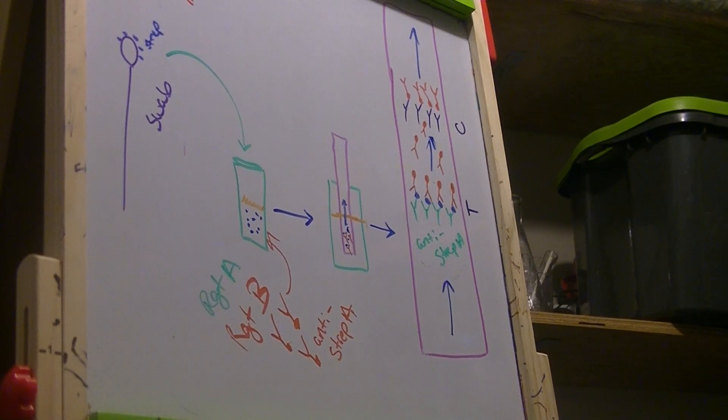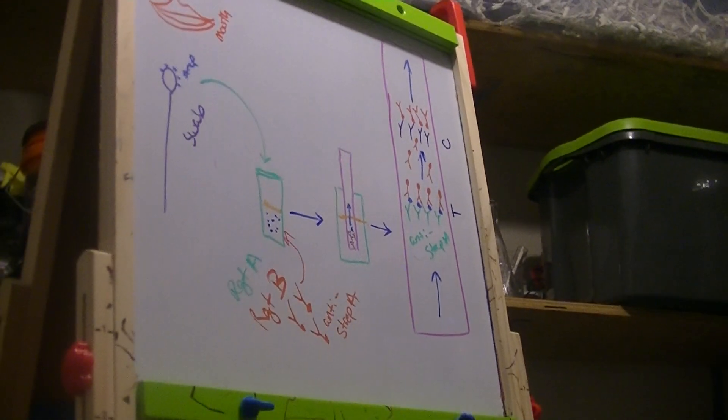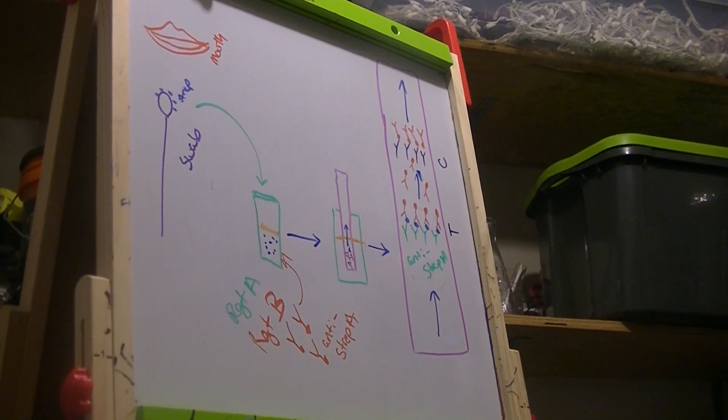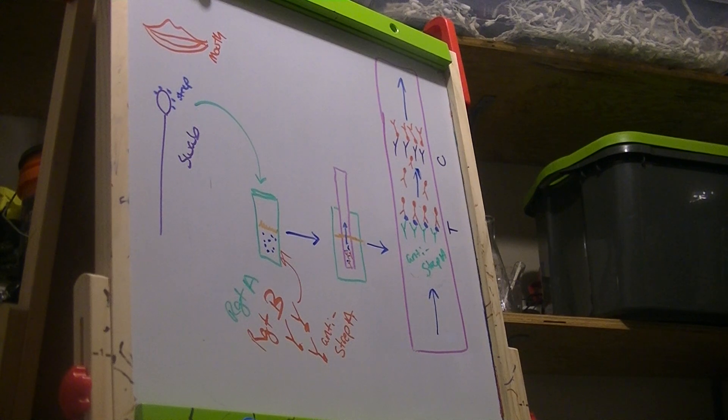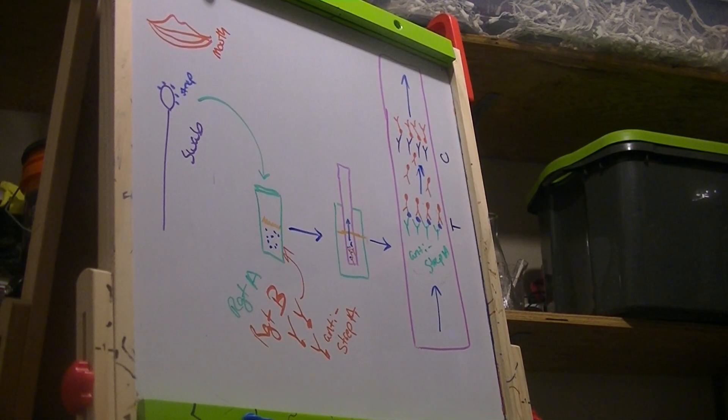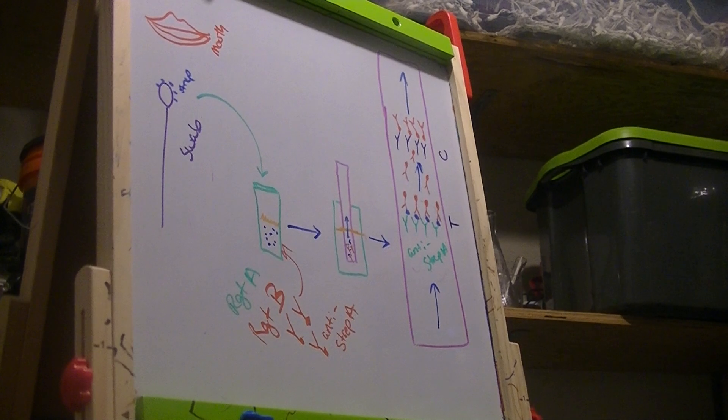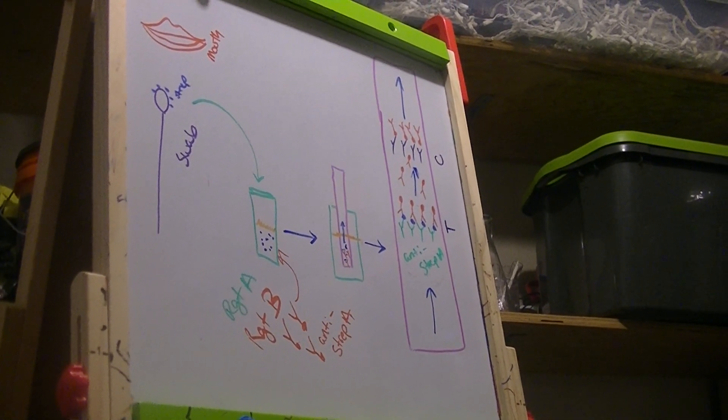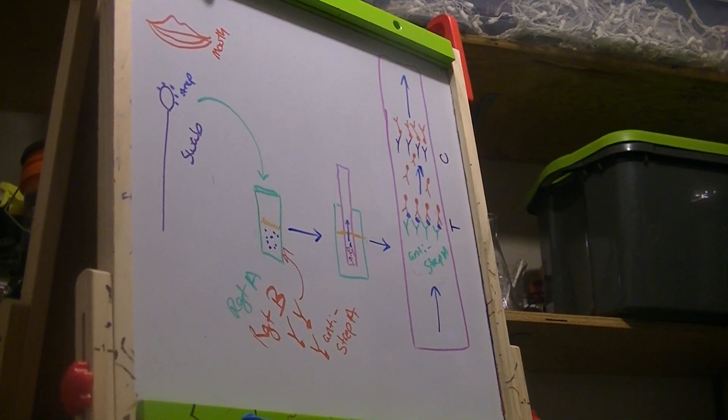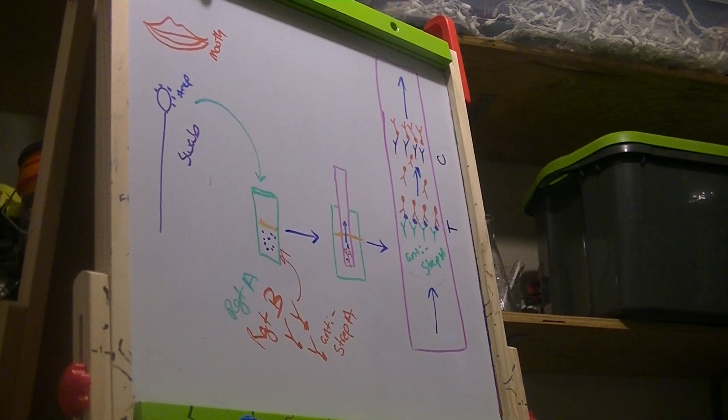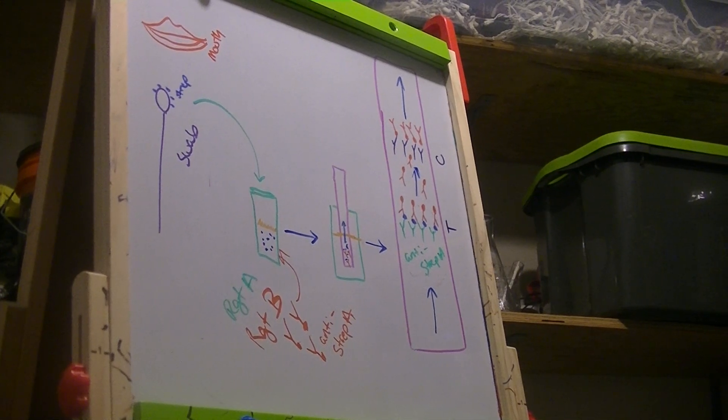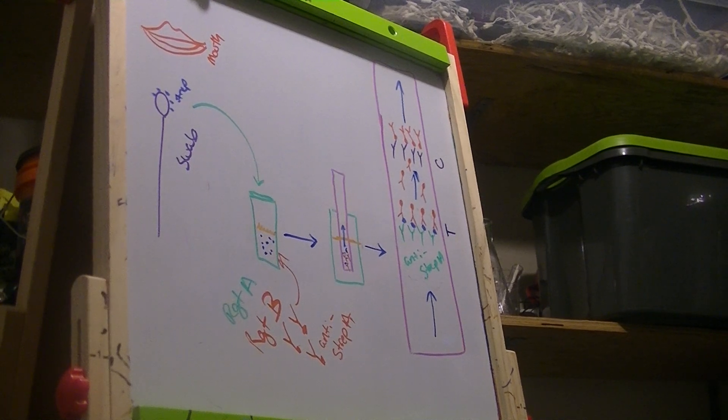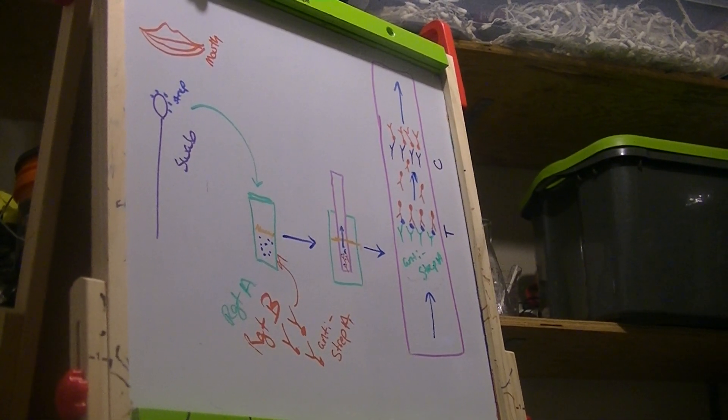This rapid strep swab test is detecting streptococcus antigen from the actual organism. This is different from the ASO or anti-streptolysin O latex test we also performed today, because in the ASO test you are detecting antibodies that a person's immune system produced against the strep organism. You are not detecting the organism itself.